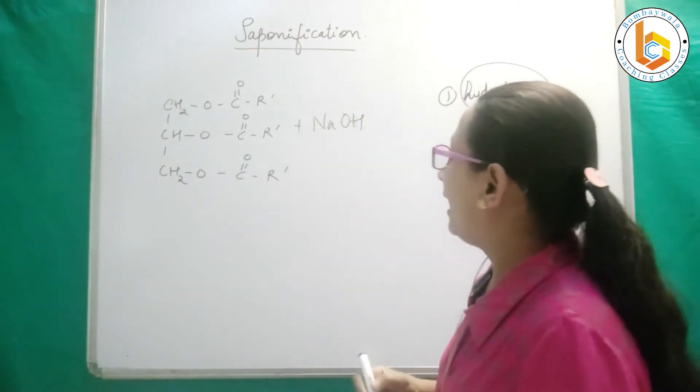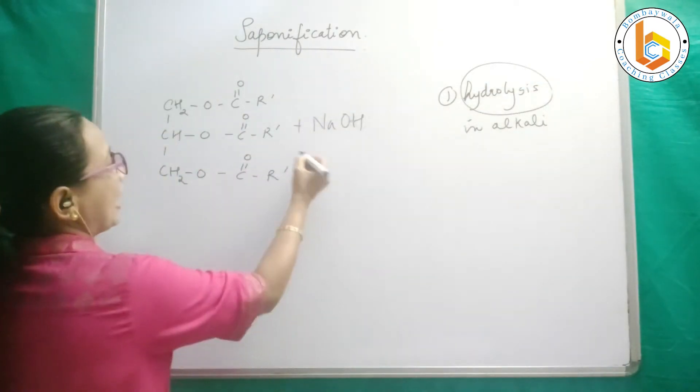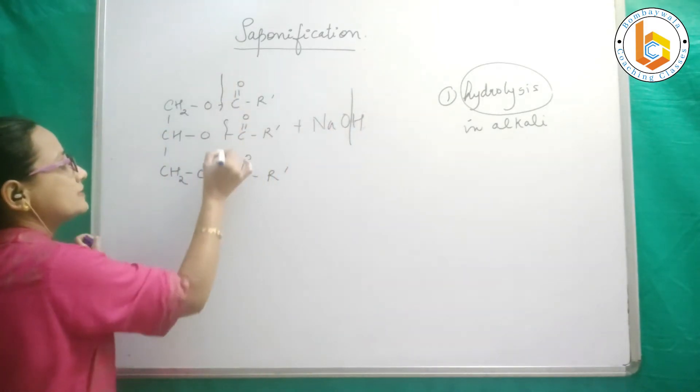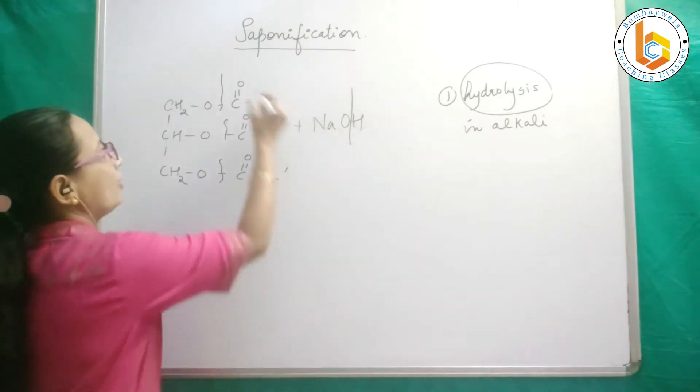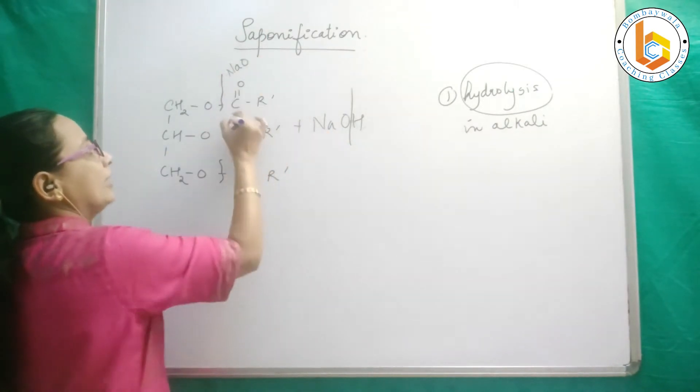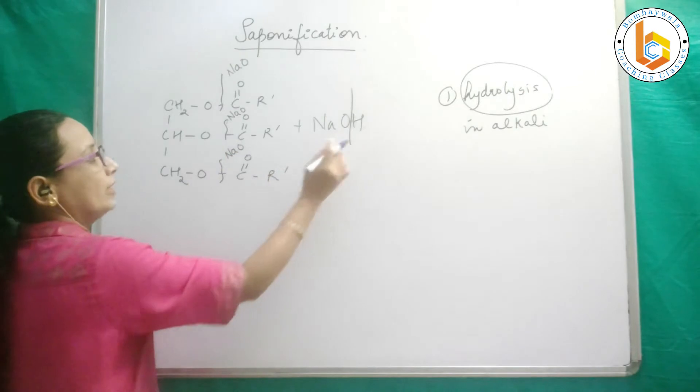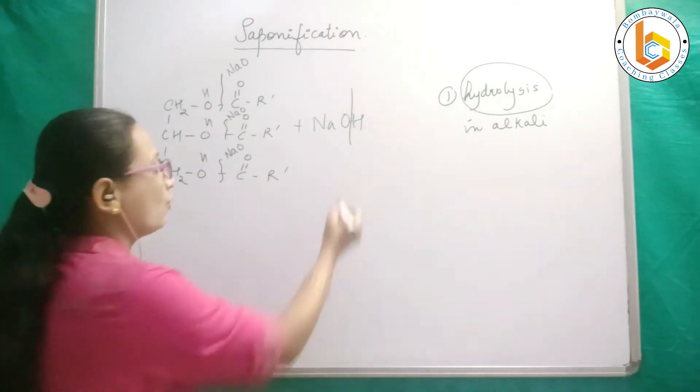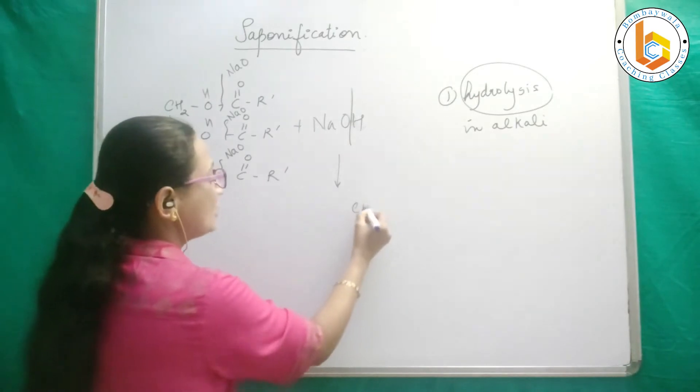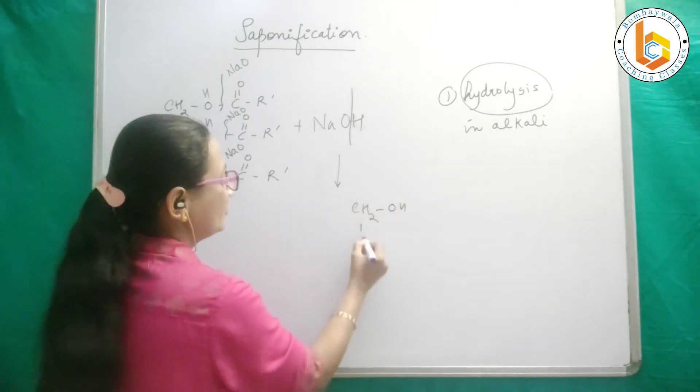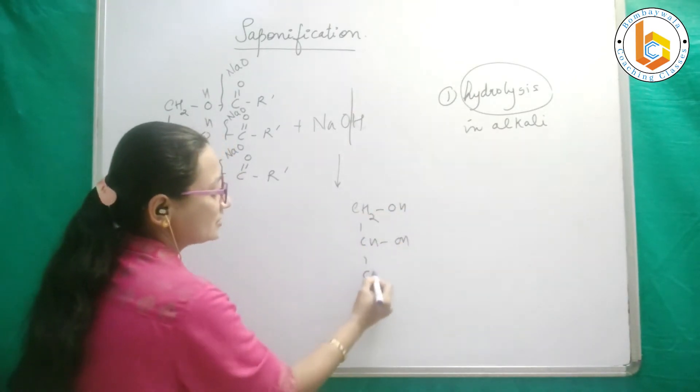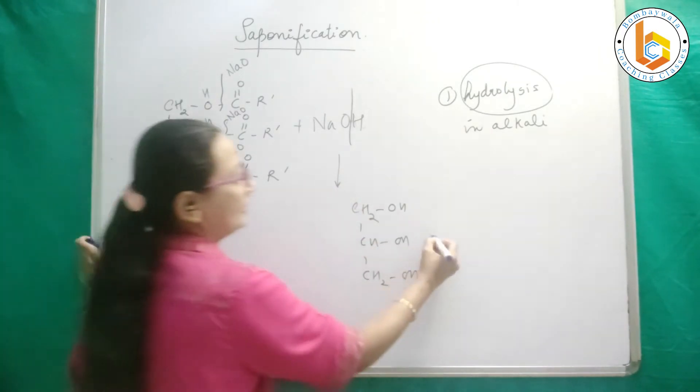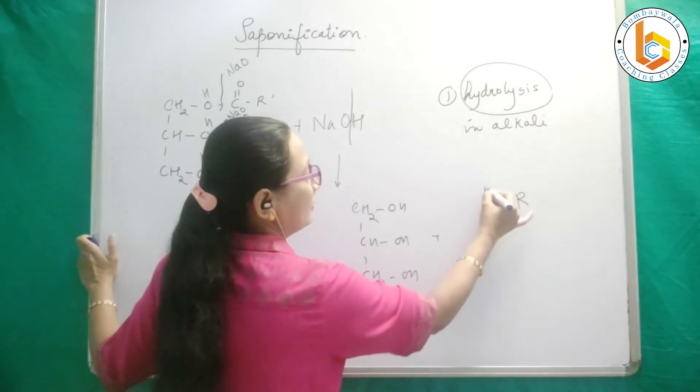So here what is happening? See, have a look at this. This is NaOH. See, breaks down like this and this breaks down like this. So this NaOH portion is coming here - NaOH and NaOH. And here is coming H, H and another H. So what do I get here? CH2OH, CHOH, CH2OH.